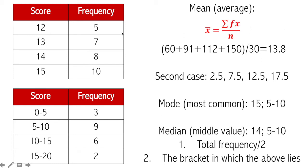Over here the value x is clear — we take 12, 13, and so on. But in the second table a range is given rather than a particular value of x. In that case we take the midpoint of each bracket as x: for 0–5 we take 2.5, then 7.5, 12.5, 17.5, and so on. We then calculate 2.5×3 + 7.5×9 + 12.5×6 + 17.5×2, divided by 3+9+6+2 = 20, and that gives us the mean.